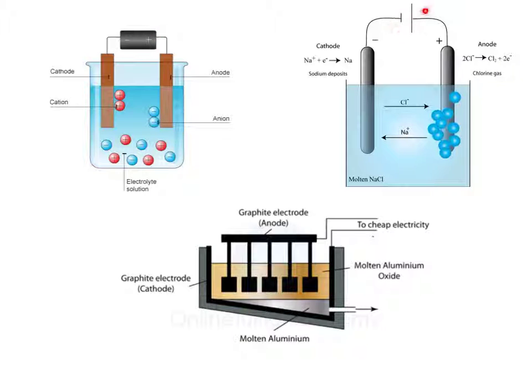And you have something providing electricity. There's a battery in that case, a cell here, and mains electricity in this one. There is always an electrolyte: molten aluminum oxide, molten sodium chloride, or the electrolyte solution in this more generic diagram. And there is always a current flowing between them.